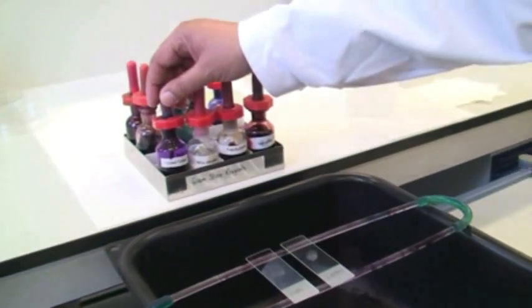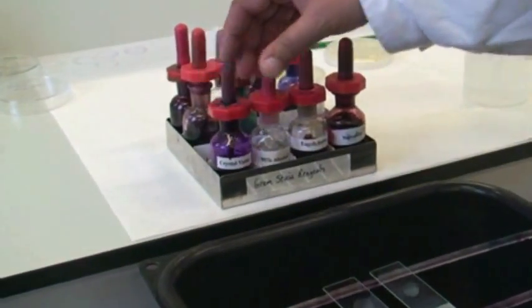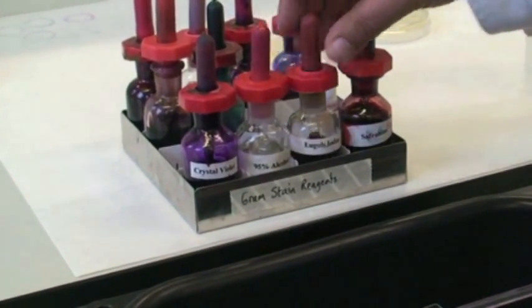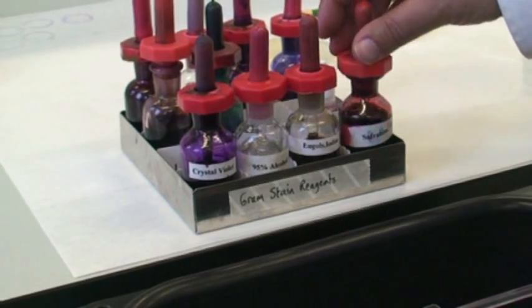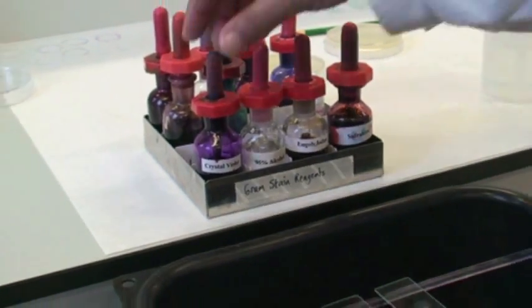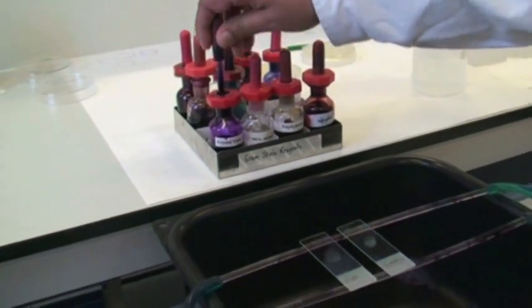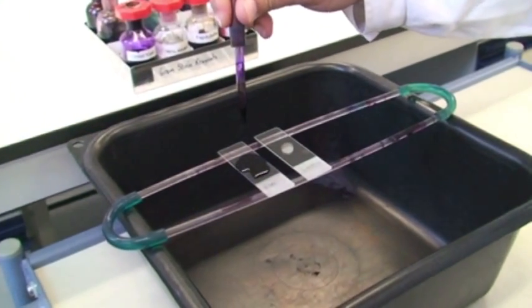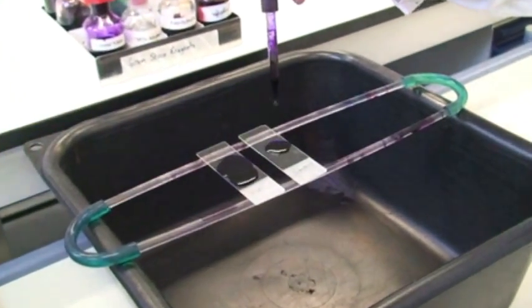These are the Gram stains that we're going to be using: crystal violet, 95% alcohol, iodine, and safranin. And if we start first by putting the crystal violet on, making sure you cover the area where you've put the bacteria onto the slide, and the same with the second slide.